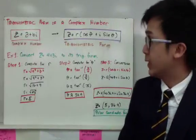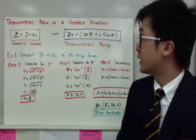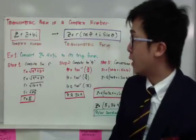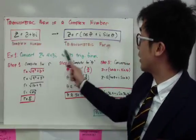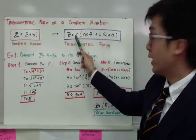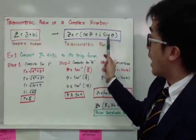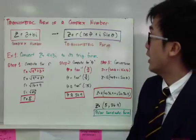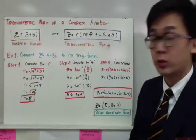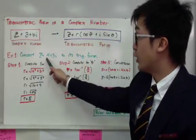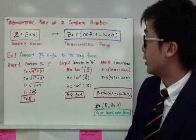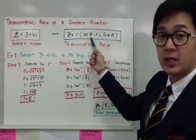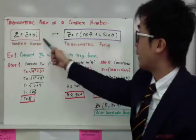Another application of the complex number in trigonometry is to change it into its trigonometric form, and in the process, we'll be able to find its polar coordinate. The complex number a plus bi is sometimes called the rectangular coordinate, and we're going to change it into its trigonometric form: z equals r times cosine theta plus i sine theta. There are three steps to convert: first find r, then find theta, and then rewrite a plus bi in that format.